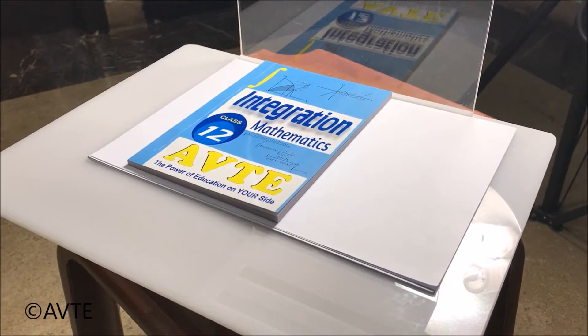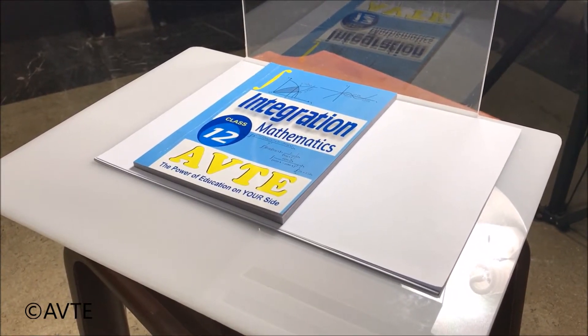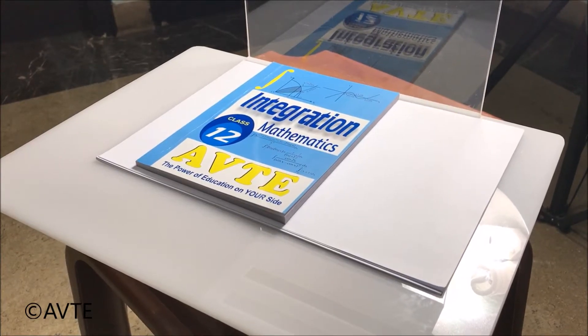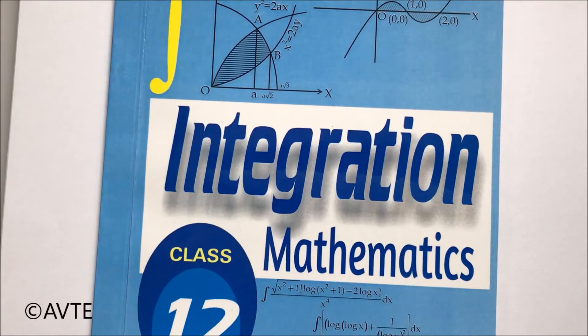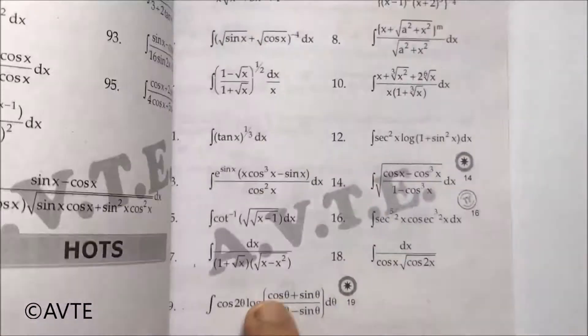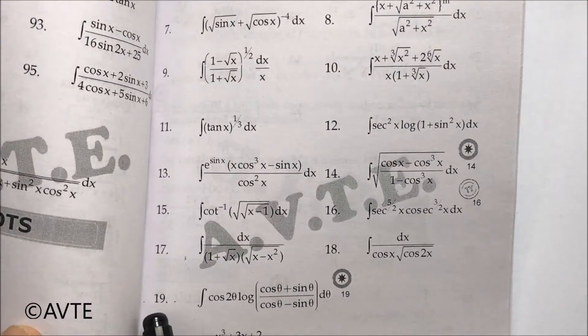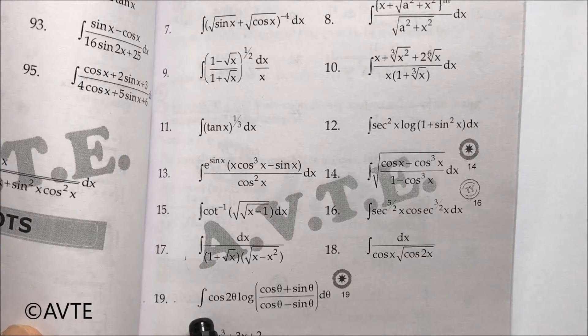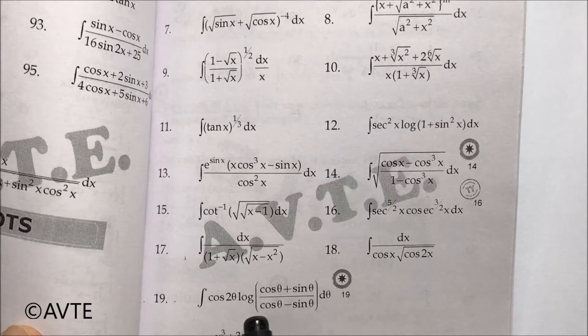From the book by AVT on integration, we are taking question number 19 on page number 39. This question says: integrate cos 2θ log((cos θ + sin θ)/(cos θ - sin θ)) dθ.